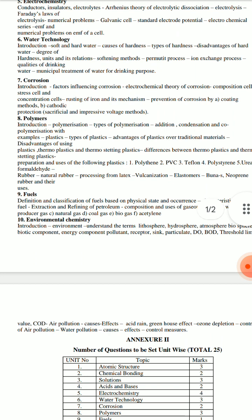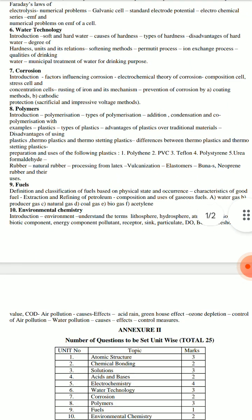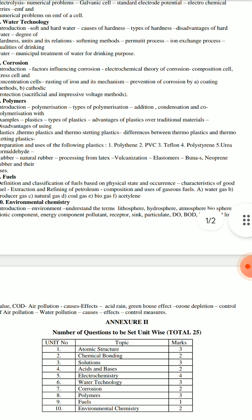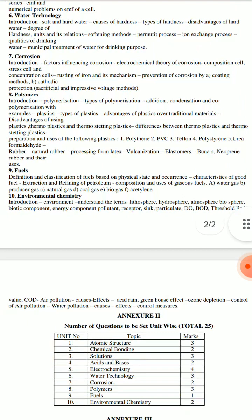Corrosion is theory-based. The topics include factors influencing corrosion, electrochemical theory of corrosion, and types of cells such as composition, stress, and concentration cells. There is also the mechanism for rusting of iron and prevention of corrosion, including coating methods, cathodic protection, and sacrificial anode voltage methods.